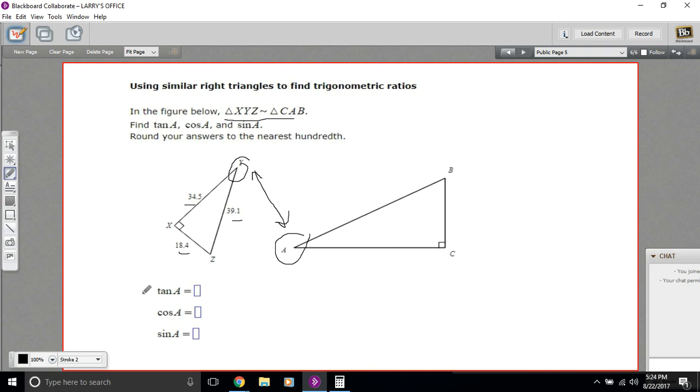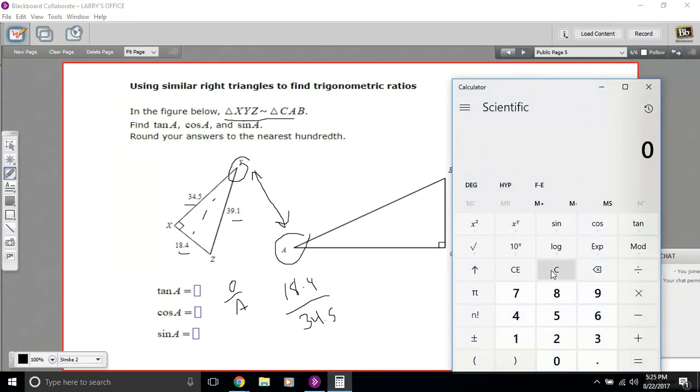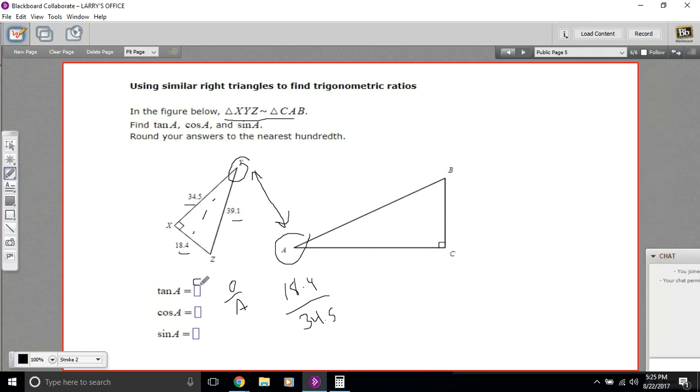So actually, let's try that. First up, we're at tangent. And tangent is opposite over adjacent. So since Y is the corresponding angle to A here, we want the opposite of Y. So that's 18.4 over the adjacent, and the adjacent would be 34.5. So let me grab a calculator here. So 18.4 divided by 34.5. And I'm getting 5.3 repeating. We'll just round that to 5.3. So this one is 5.3. Actually, they wanted the nearest hundredth. So 5.33.